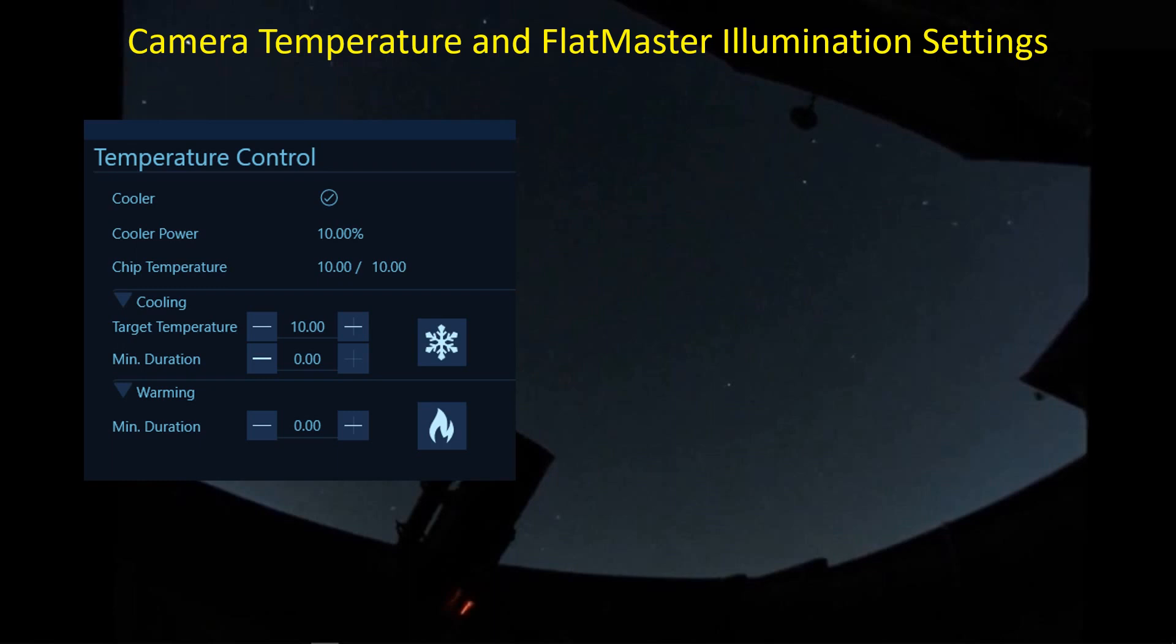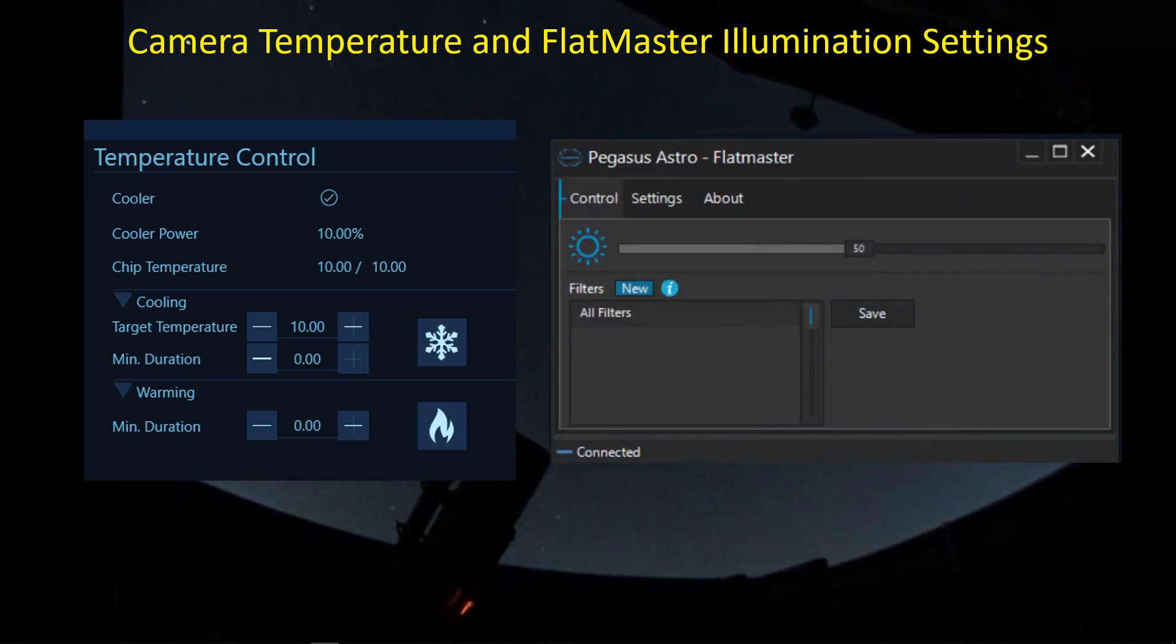And I will use the Flatmaster control software that comes with the Flatmaster. This allows you to, if you go into settings here, you connect up to the Flatmaster and then that will automatically turn the Flatmaster on to full power at 100%. I crank it back to 50%. I find that that works better.